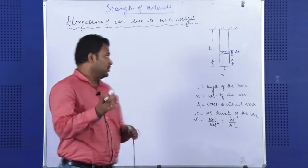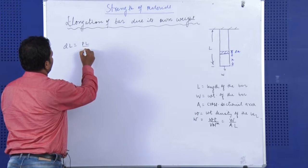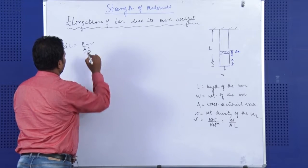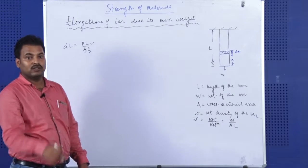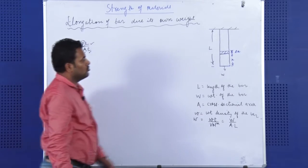Now, if you can remember, the formula for the elongation is DL equal to PL by AE. Here L, A and E are known to us, and they are constant. But as you can see that this P is not constant throughout the bar.